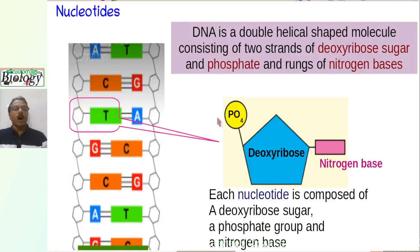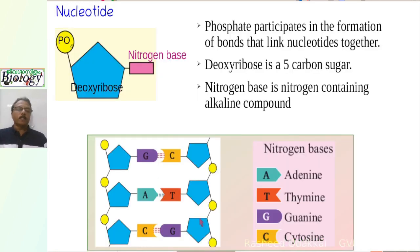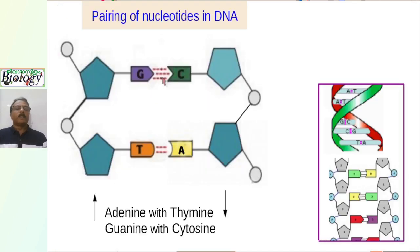Thymine is paired with adenine nucleotide, and cytosine is paired with guanine. The phosphate groups participate in the bonding of nucleotides and the rung-like structures, or nucleotide pairs. Guanine pairs with cytosine by a triple bond and thymine with adenine by a double bond.